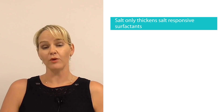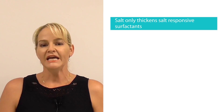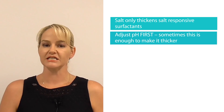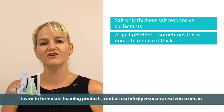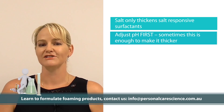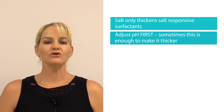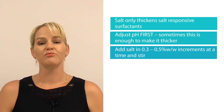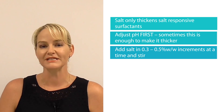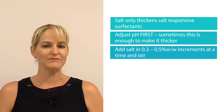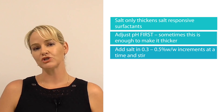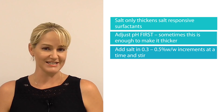So that is how salt thickens certain types of surfactant systems. Just remember it won't work if the surfactant is not salt responsive. It's also really important that you check and adjust the pH first. As you saw in today's video, the pH change didn't affect our surfactant system enough, so we used a little bit of salt to help it thicken more. You'll also note that I added salt in 0.3 to 0.5% weight-for-weight increments — 0.5% at an absolute maximum at a time — because if you overshoot the mark you'll irreversibly thin your formula and have to start again.